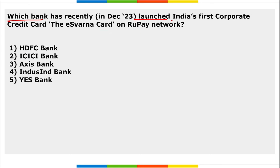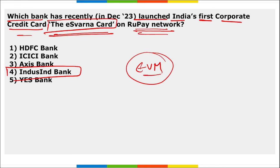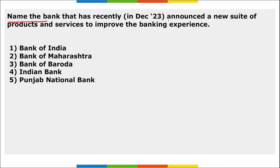Next: which bank has recently launched India's first corporate credit card — the e-Savarni card — on the RuPay network? It is IndusInd Bank. The e-Savarni card is an EMV (Europay, Mastercard, and Visa) card aligned with NPCI's vision for a digital inclusive society.